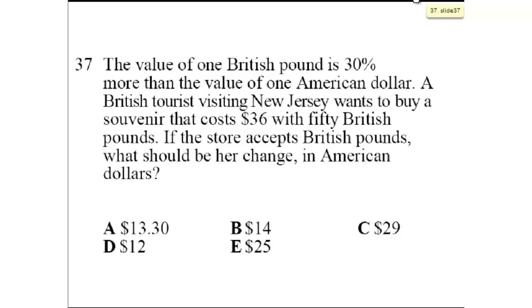Number 37. The value of one British pound is 30% more than the value of one American dollar. That means that one British pound equals one US dollar plus 30% because the British pound is more valuable. It is 30% more than the value of an American dollar. If we want to express in a decimal something that is 30% more, that's like saying 130%, which is 1.3. So one great British pound equals 1.3 US dollars.